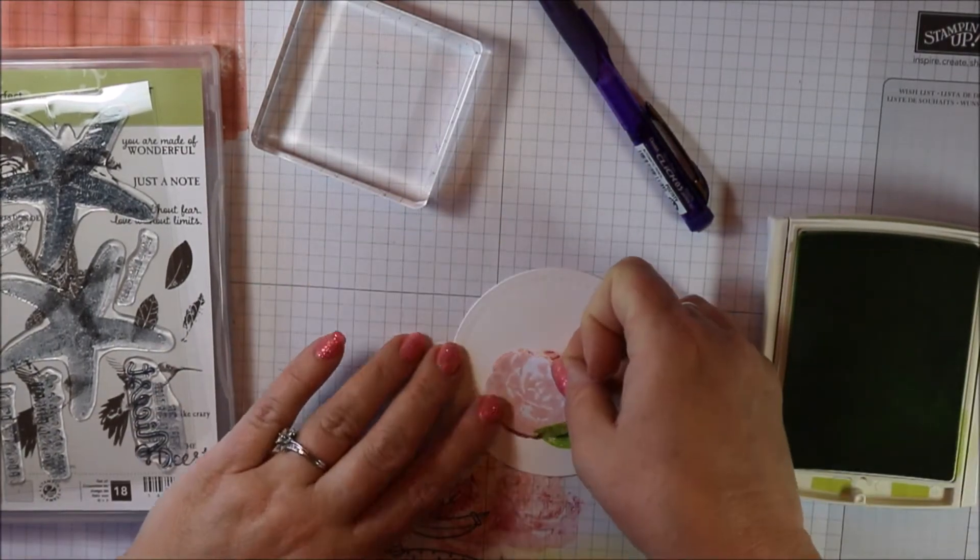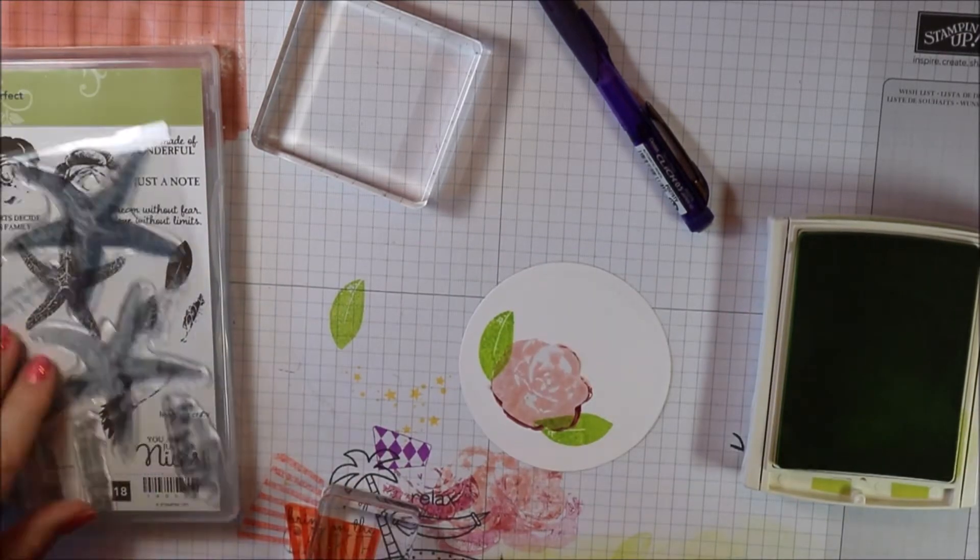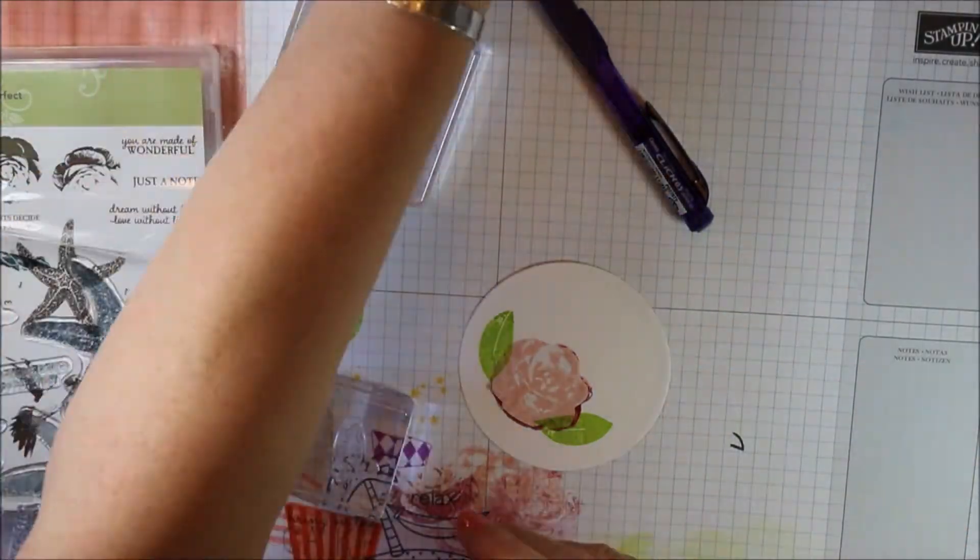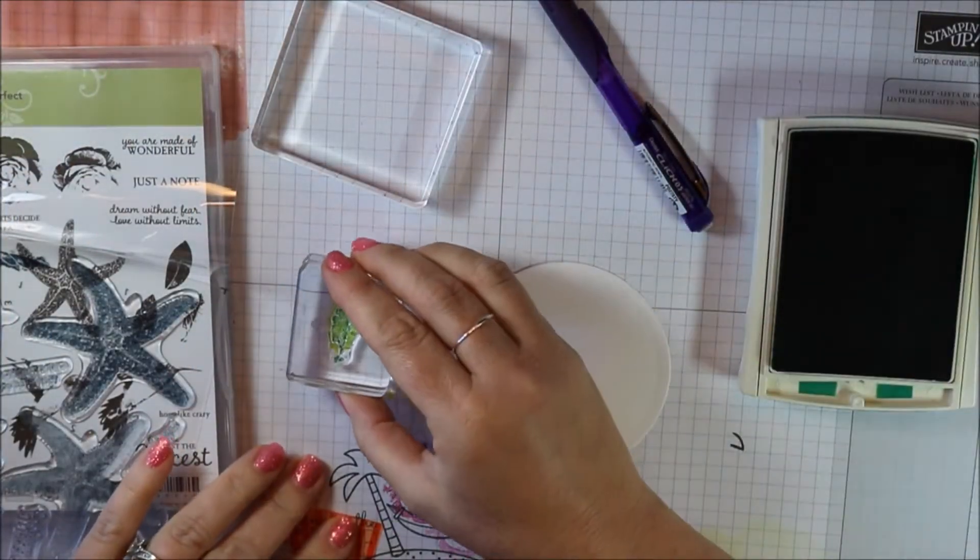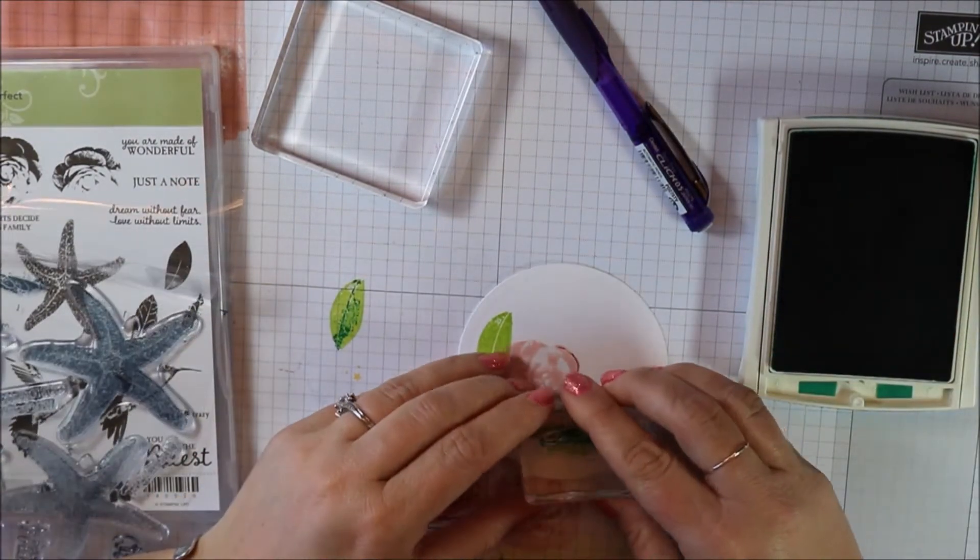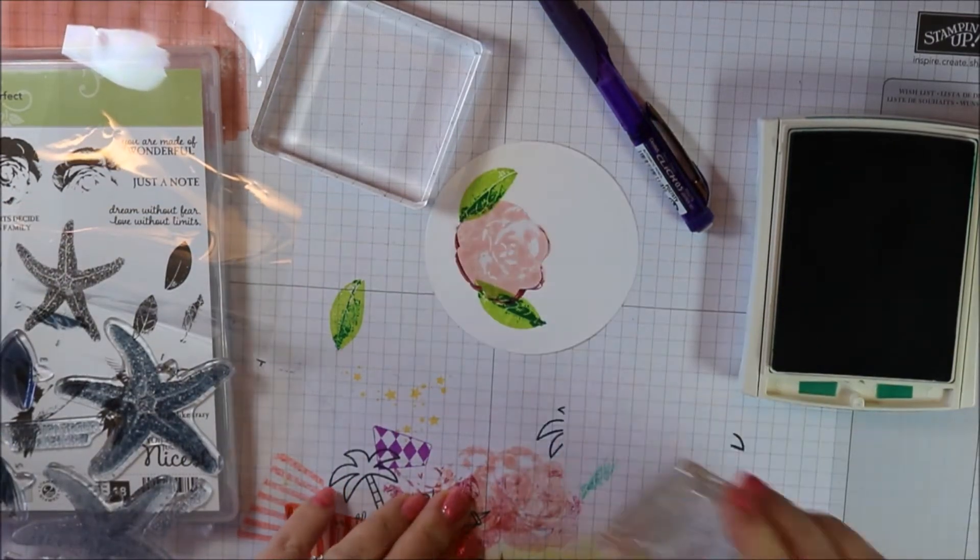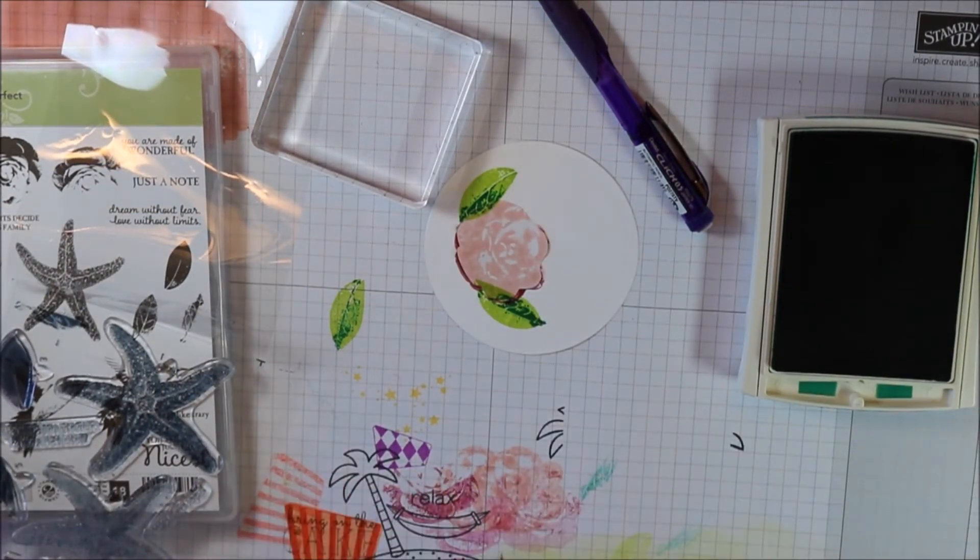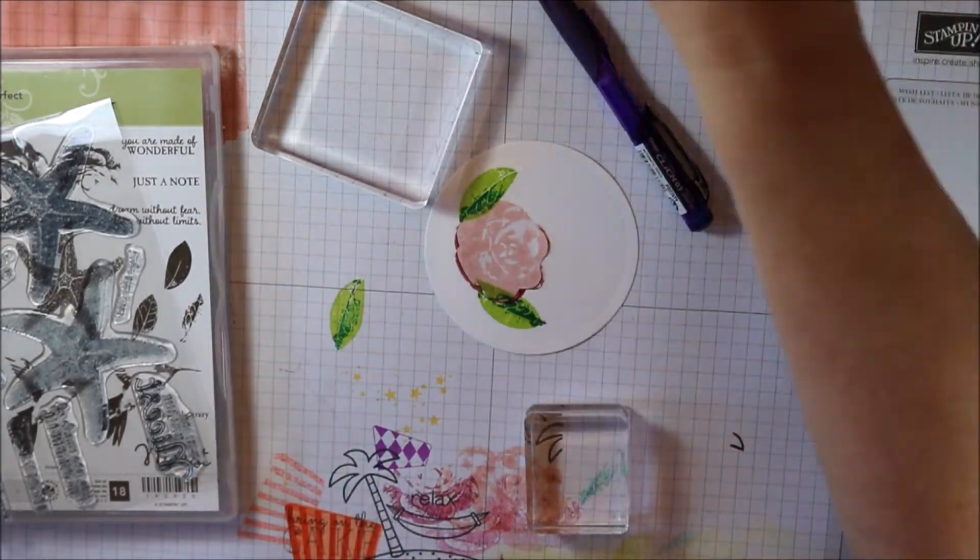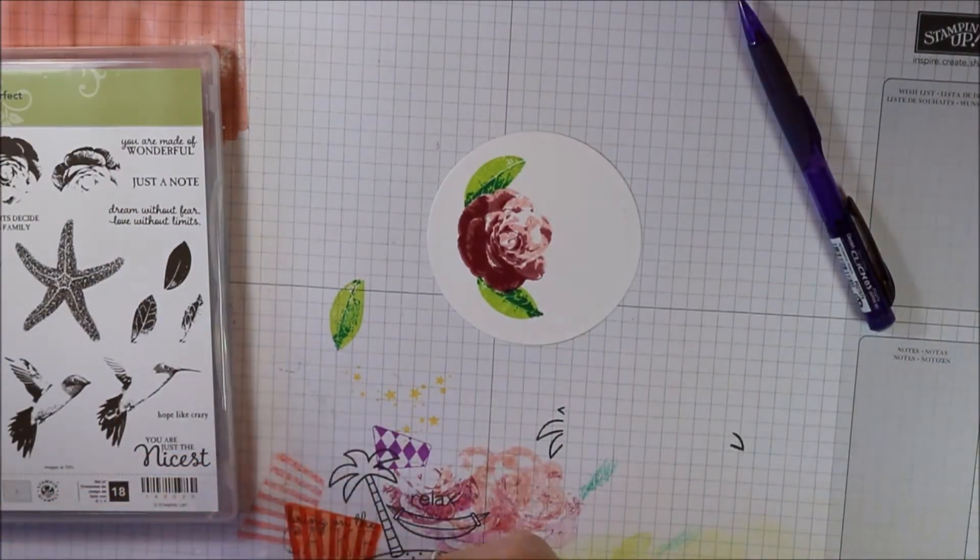So here I'm just stamping it in Lemon Lime Twist. That's the same ink that I used for the background. And then I'm pulling in, I think this is Emerald Envy. I don't know all of the names. These are all Stampin' Up inks and stamps that I'm using today. But I just grabbed another one of those because this is a multi-step leaf. I only used two instead of all three. And I started with my lightest and then went with my darkest.